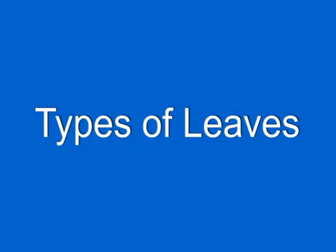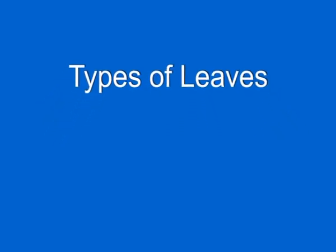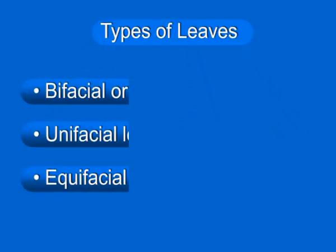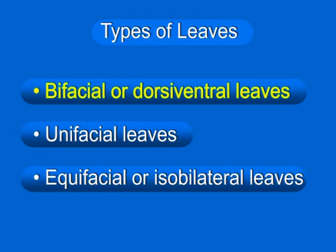There are three types of leaves: bifacial or dorsiventral leaves, unifacial leaves, and equifacial or isobilateral leaves. We will discuss these types one by one.